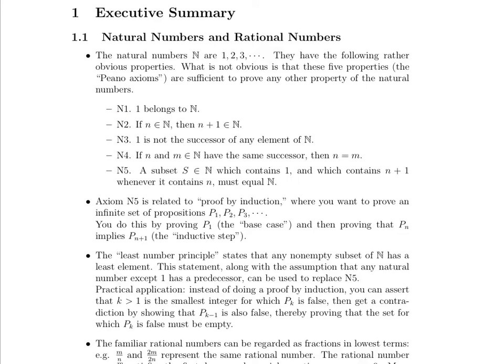The first property is that 1 belongs to the natural numbers. The second property is that if you have an element that belongs to the natural numbers, you can add 1 to that element, and that will also belong in the natural numbers. The third property is that 1 is not the successor of any element of the natural numbers. The fourth property is that if you have two elements of the natural numbers and they have the same successor, then those two elements are, in fact, equal to each other.